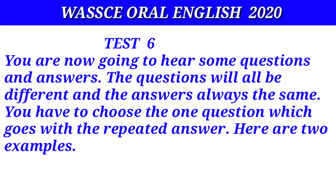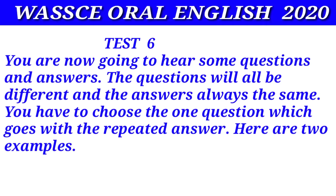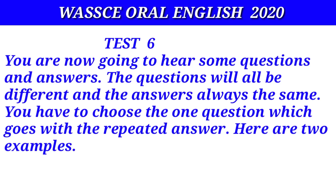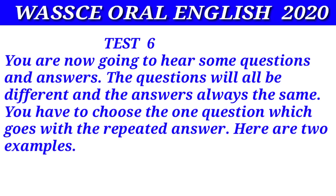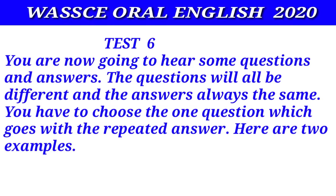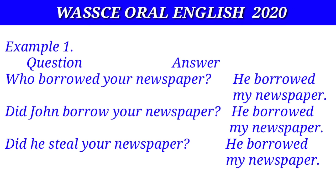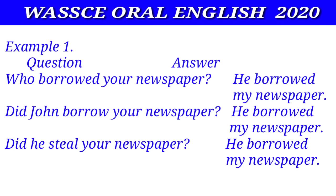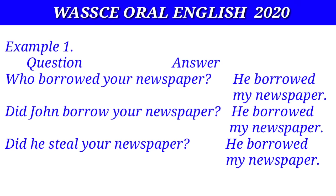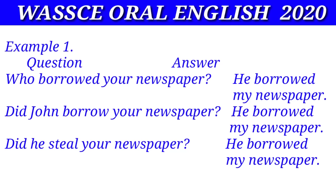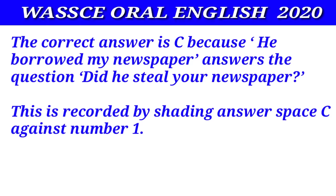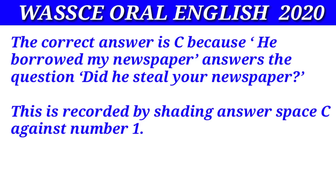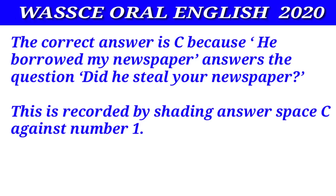Test six. You are now going to hear some questions and answers. The questions will all be different and the answer is always the same. You have to choose the one question which goes with the repeated answer. Here are two examples. Example one: who borrowed your newspaper? — He borrowed my newspaper. Did you borrow your newspaper? — He borrowed my newspaper. Did you steal your newspaper? — He borrowed my newspaper. The correct answer is C because he borrowed my newspaper answers the question. This is recorded by shading answer space C against number one.